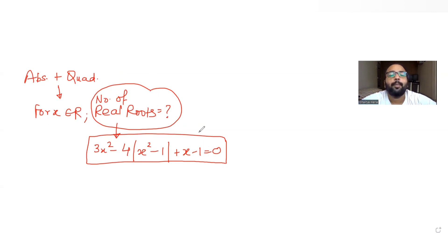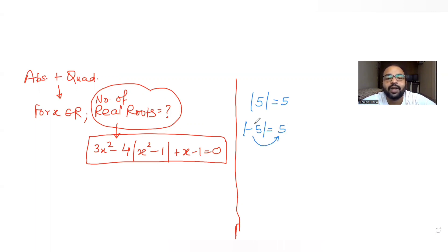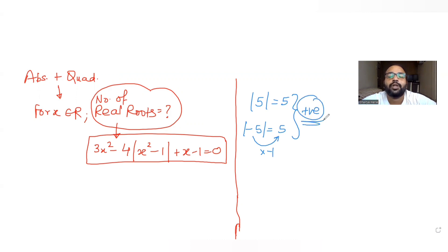Before starting, let's develop the concept of absolute values. If I want to find, say, mod of 5 — whenever a positive value is present within the mod, we write it as it is. And if a negative value is present within the mod, we remove that negative sign, or in other words, we multiply the entire expression inside the mod with minus one to get a positive value, because mod of anything always gives us a positive value.